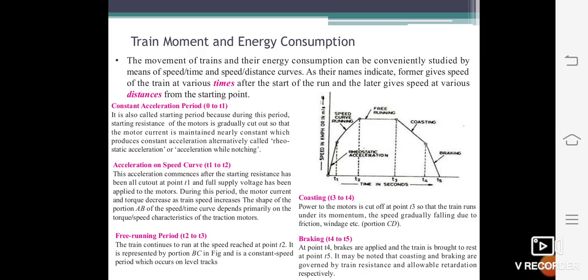The next one is the speed voltage acceleration period. These acceleration moments occur after the starting resistance has been all cut off at point T1 and full voltage has been applied to the motors. During this period the motor current and torque decrease as the train speed increases. The shape of the period T1 to T2 on the speed-time curve depends primarily on the torque-speed characteristic of the traction motor.